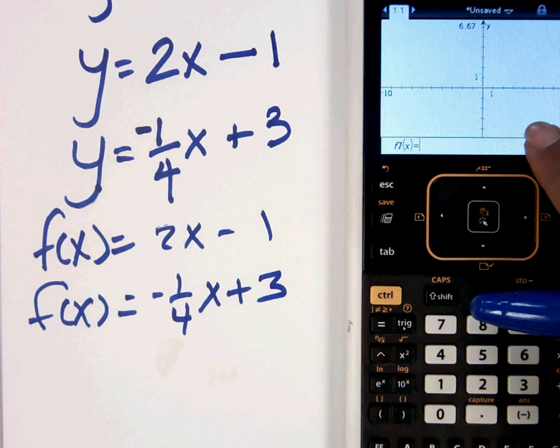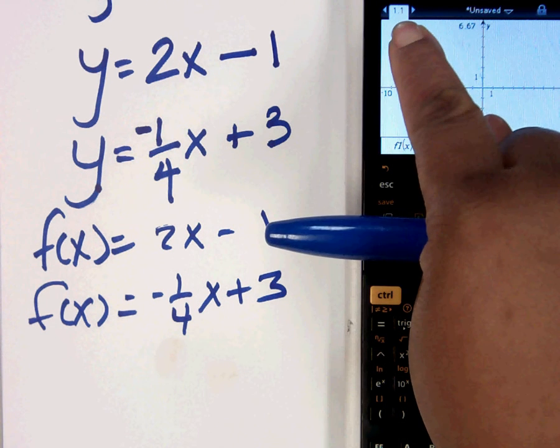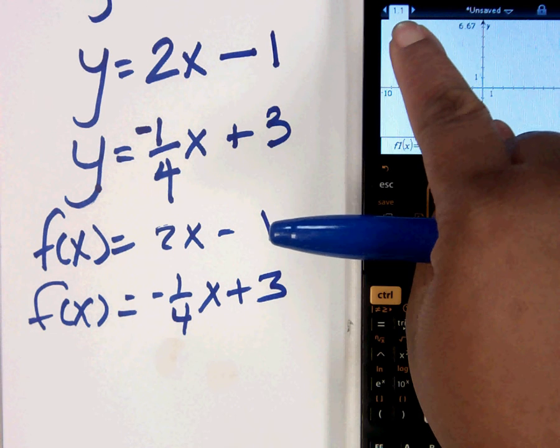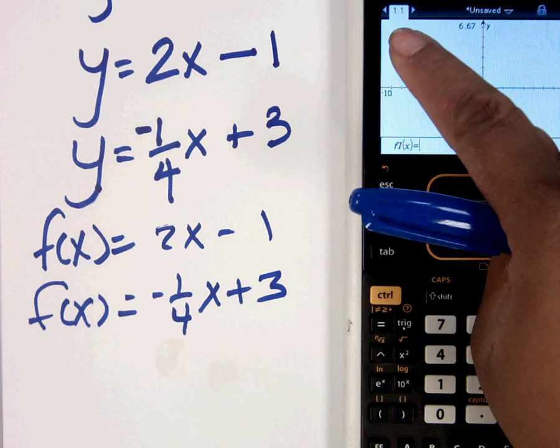So everything that we've already done has been erased. I know that because it says 1.1. If it was still there, it would be like 1.2 or 2.1 or something of that sort. Not 1.1. That's starting over.